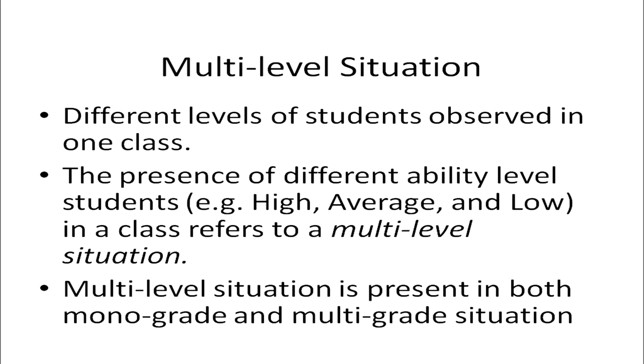A multi-level situation is slightly different from the multi-grade situation. It occurs when there is a presence of different ability levels — high ability, average ability, and low ability students — in one class. The multi-level situation is present in both monograde and multi-grade situations but is more relevant for a monograde situation.